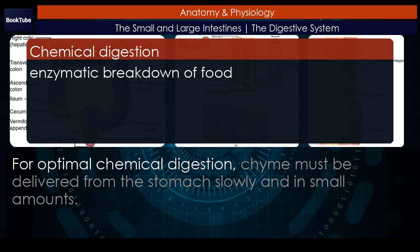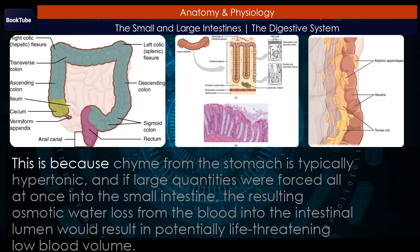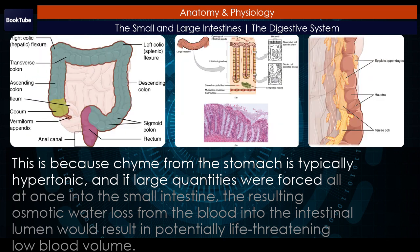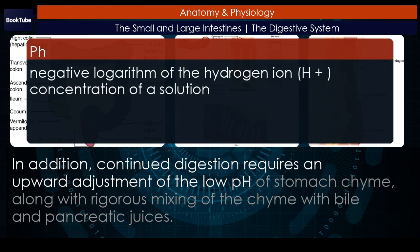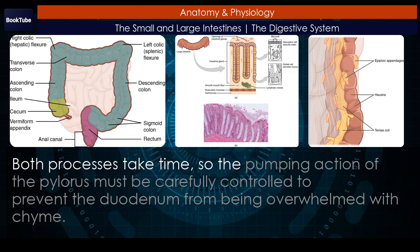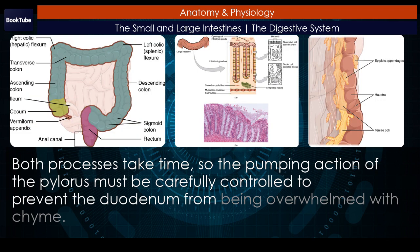For optimal chemical digestion, chyme must be delivered from the stomach slowly and in small amounts. This is because chyme from the stomach is typically hypertonic, and if large quantities were forced all at once into the small intestine, the resulting osmotic water loss from the blood into the intestinal lumen would result in potentially life-threatening low blood volume. In addition, continued digestion requires an upward adjustment of the low pH of stomach chyme, along with rigorous mixing of the chyme with bile and pancreatic juices. Both processes take time, so the pumping action of the pylorus must be carefully controlled to prevent the duodenum from being overwhelmed with chyme.